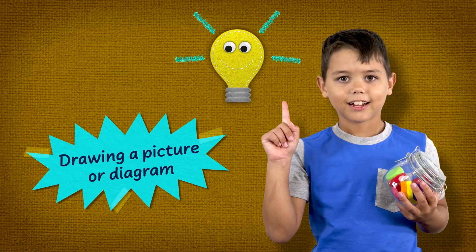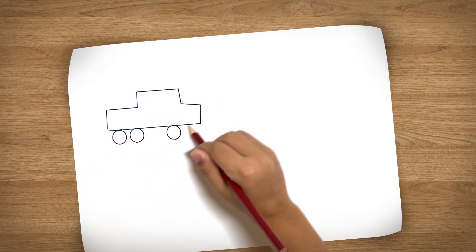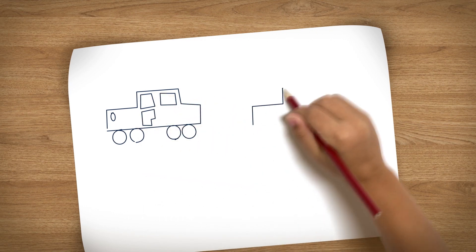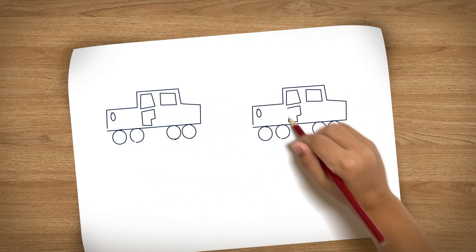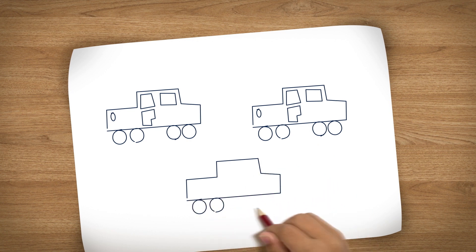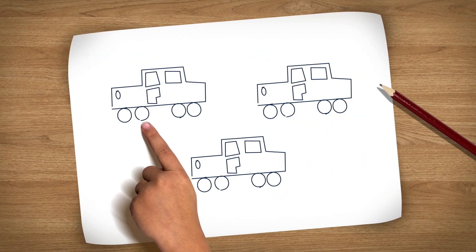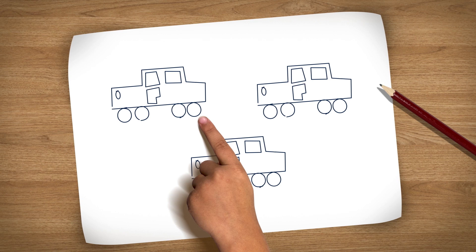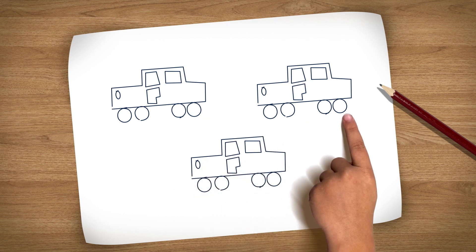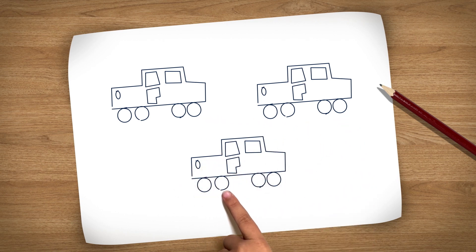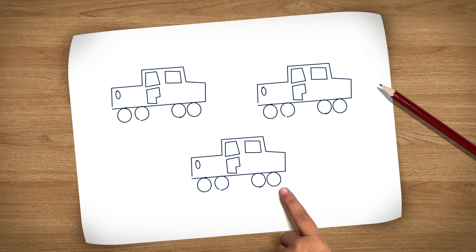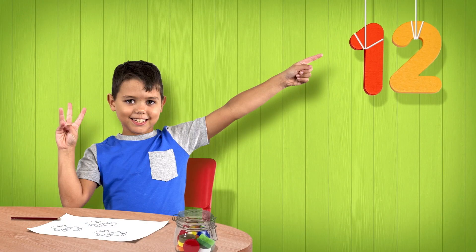I'll try drawing a picture or diagram. Each race car needs four wheels: one, two, three, four, five, six, seven, eight, nine, ten, eleven, twelve. Three race cars have twelve wheels altogether.